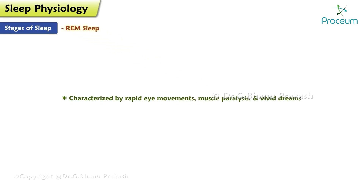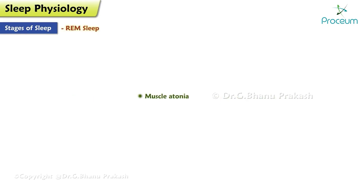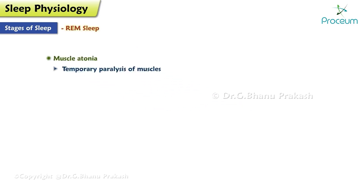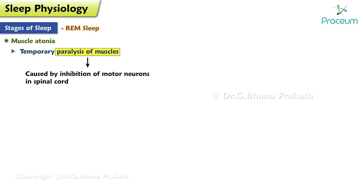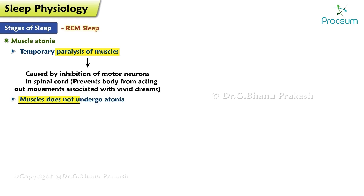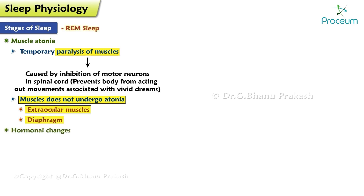Rapid eye movement sleep is characterized by rapid eye movements, muscle paralysis, and vivid dreams. REM sleep is also characterized by muscle atonia — a temporary paralysis of the muscles — thought to be caused by the inhibition of motor neurons in the spinal cord, which prevents the body from acting out movements associated with vivid dreams. The muscles that do not undergo atonia during REM sleep are the extraocular muscles and the diaphragm.